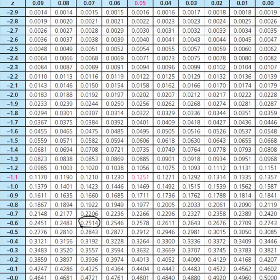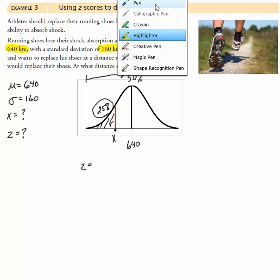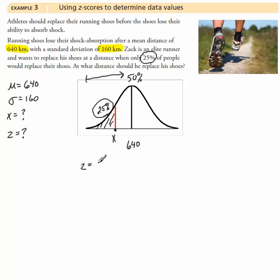So we're going to work this in reverse now. So I'm going to look back. And I would have negative 0.6. And looking up, 0.07. So our answer will be negative 0.67. So our z-score is negative 0.67.